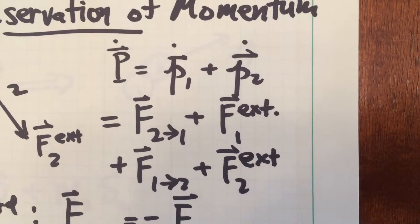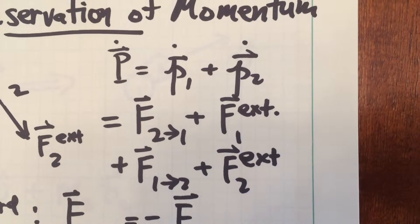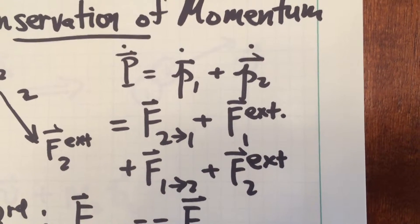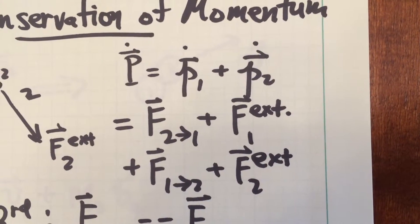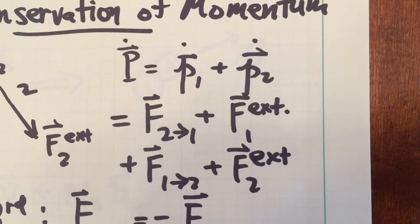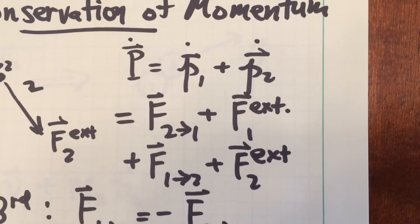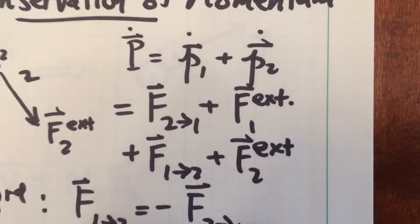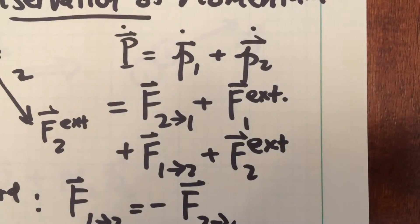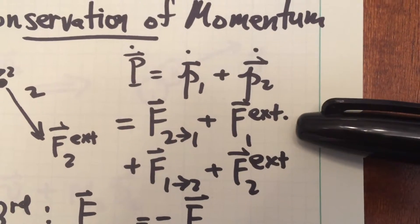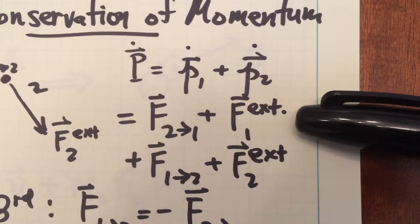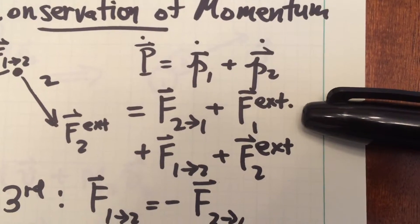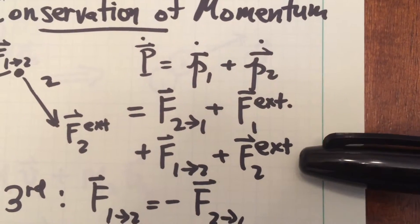We can write the system's total momentum vector as capital P. So capital P-dot vector is going to be the sum of the time derivatives of the two particles' momenta. The change in the particles' momenta is given by the second line here — this is the change in particle one's momentum, which is all the forces on particle one, and the change in particle two's momentum is given by the next line.